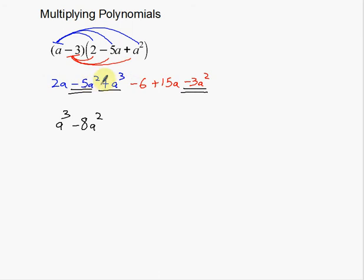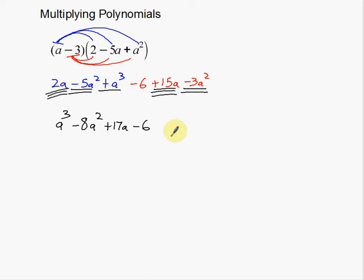I've got the cubes, the a squared terms, and my a's left over — that makes 17a — and then minus 6. So that was multiplying polynomials — a binomial times a trinomial. The difficulty here is that you just have to keep everything organized. With these underlinings and these arcs, find something that works for you so you can keep track of everything.